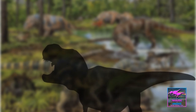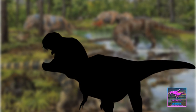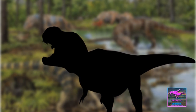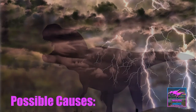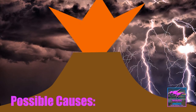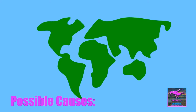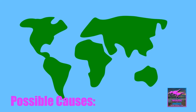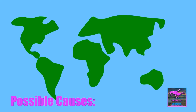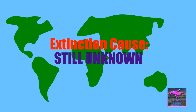Various dinosaur species began to exist during the Triassic period. The fourth mass extinction, the Triassic-Jurassic event, was possibly caused by a combination of climate change, asteroid impact, and volcanic eruption. Pangea broke down, forming the Atlantic Ocean. Scientists still don't know what caused this event. Half of the species died, but plants weren't affected that badly.